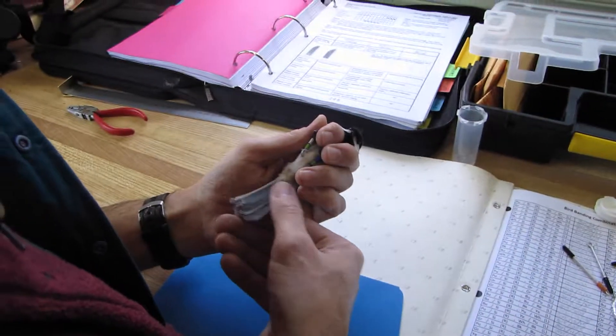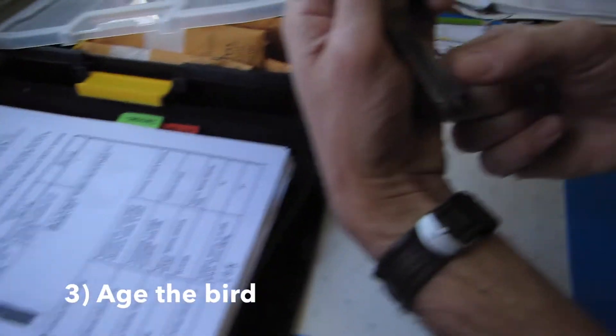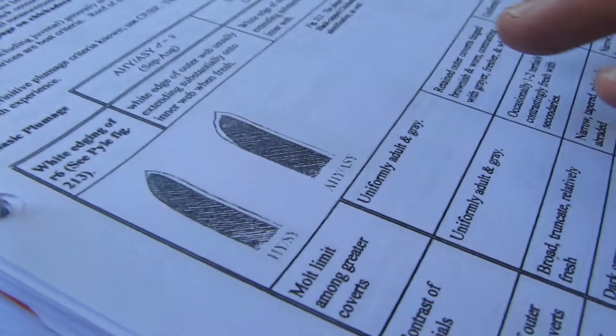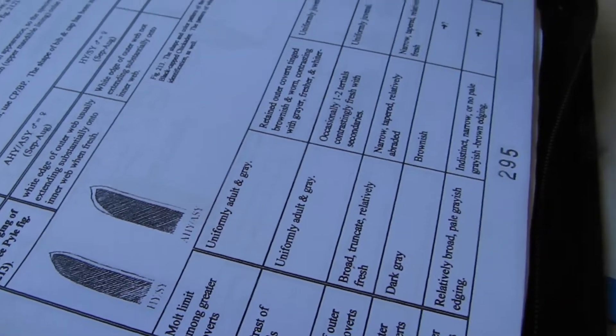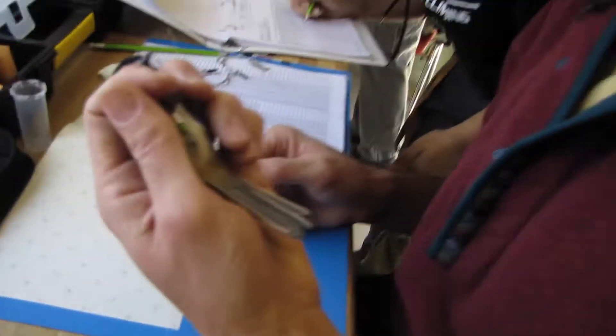So now we need to age the bird. The chickadee's tail is like this one, so it's a hatch-year bird. We use this book that has these different drawings that we use as guidelines for aging. This chickadee hatched this year.